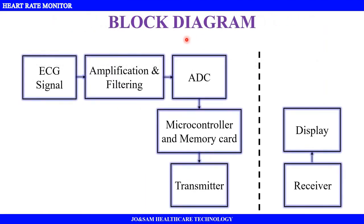Next, we talk about the block diagram. If we compare the block diagram, we compare the application to the department. As we compare the heart rate monitor, the initial stages will be almost common. First, we obtain the analog ECG signal, then we use an amplifier to set the voltage range. ECG signals have noise, so there is a filtering stage.